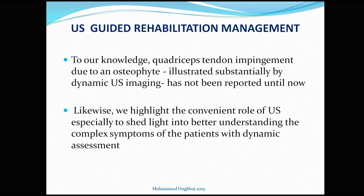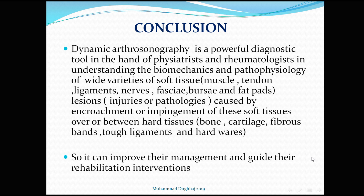We highlight the convenience of ultrasound, especially in shedding light on the complex symptoms of patients through dynamic assessment. In conclusion, dynamic arthrosonography is a powerful diagnostic tool in the hands of physiatrists and rheumatologists for understanding the biomechanics and pathophysiology of a wide variety of soft tissue lesions — muscles, tendons, ligaments, nerves, fascia, bursae, and fat pads — caused by encroachment or impingement between soft and hard tissues such as bone, cartilage, fibrous spans, tough ligaments, and hardware. This can improve management and guide rehabilitation and prevention.